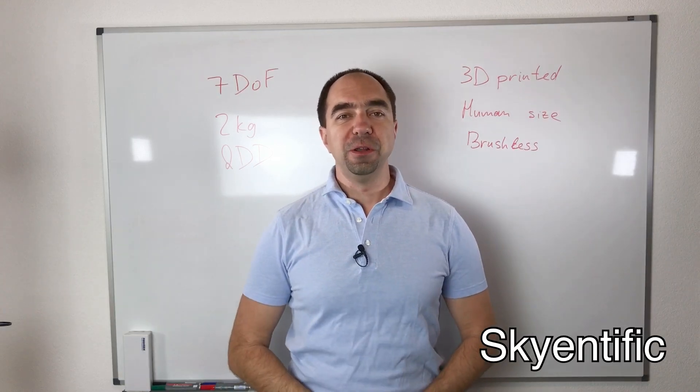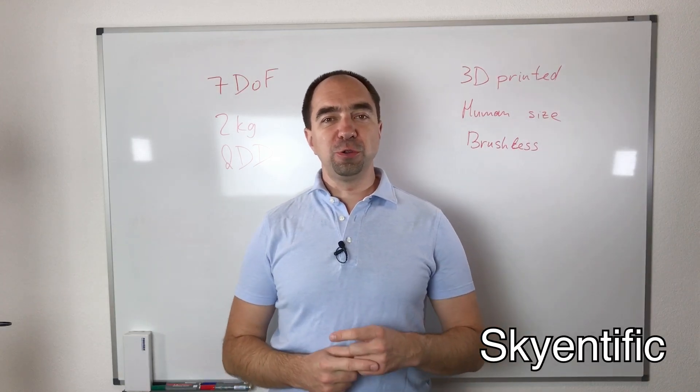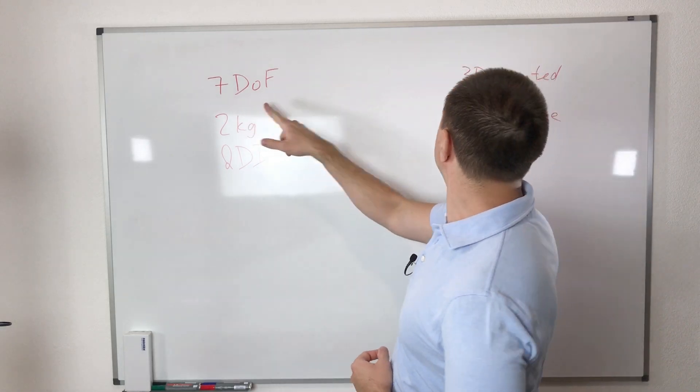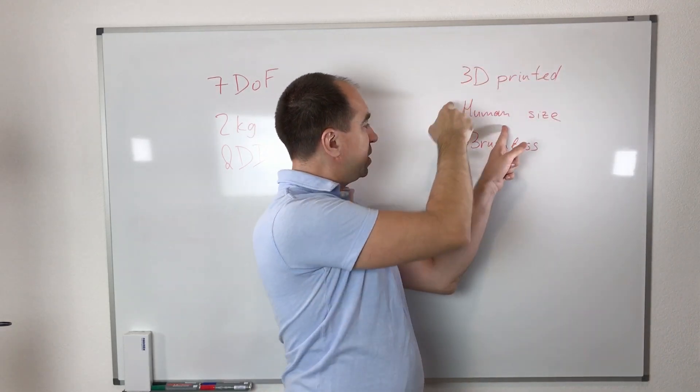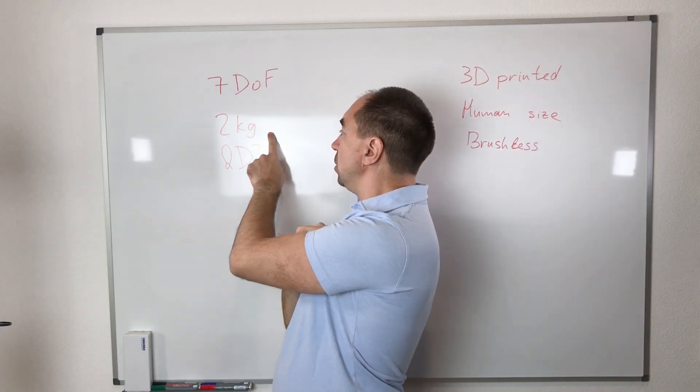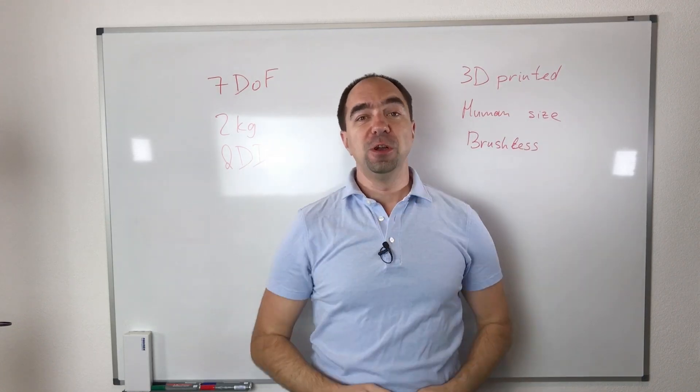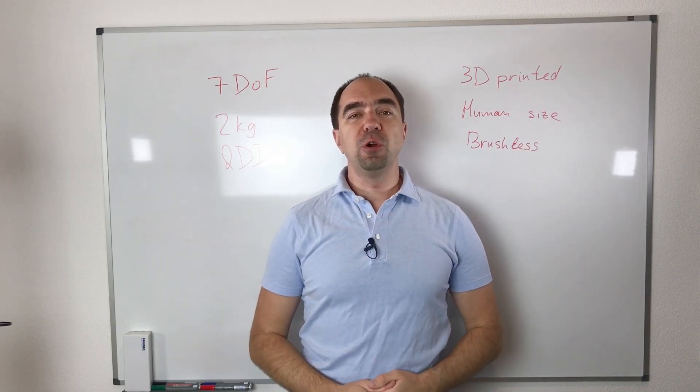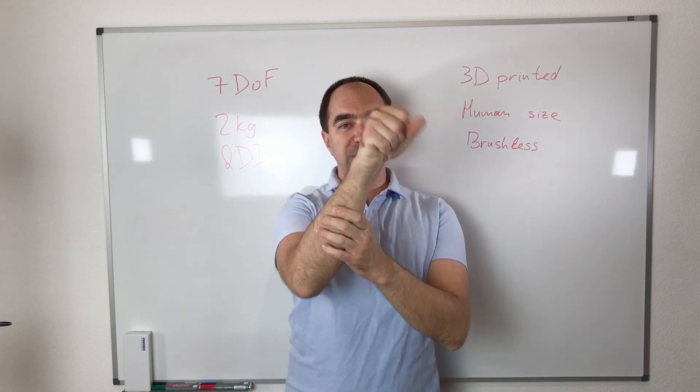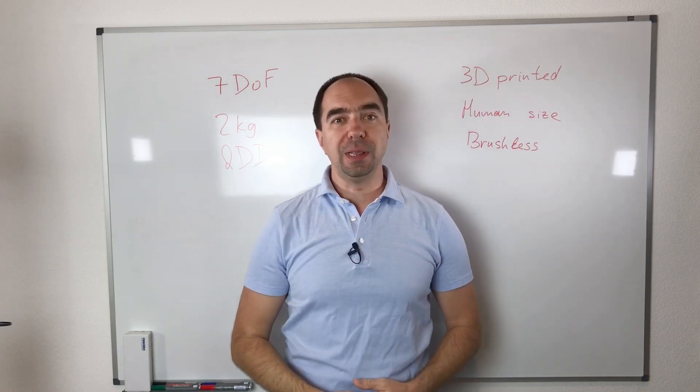Hello and welcome to my channel. Today we're going to continue to build a seven degrees of freedom, 3D printed, human size, brushless, 2kg payload, quasi-direct drive robot arm. And today we're going to take care of the wrist of the arm. So let's get started.